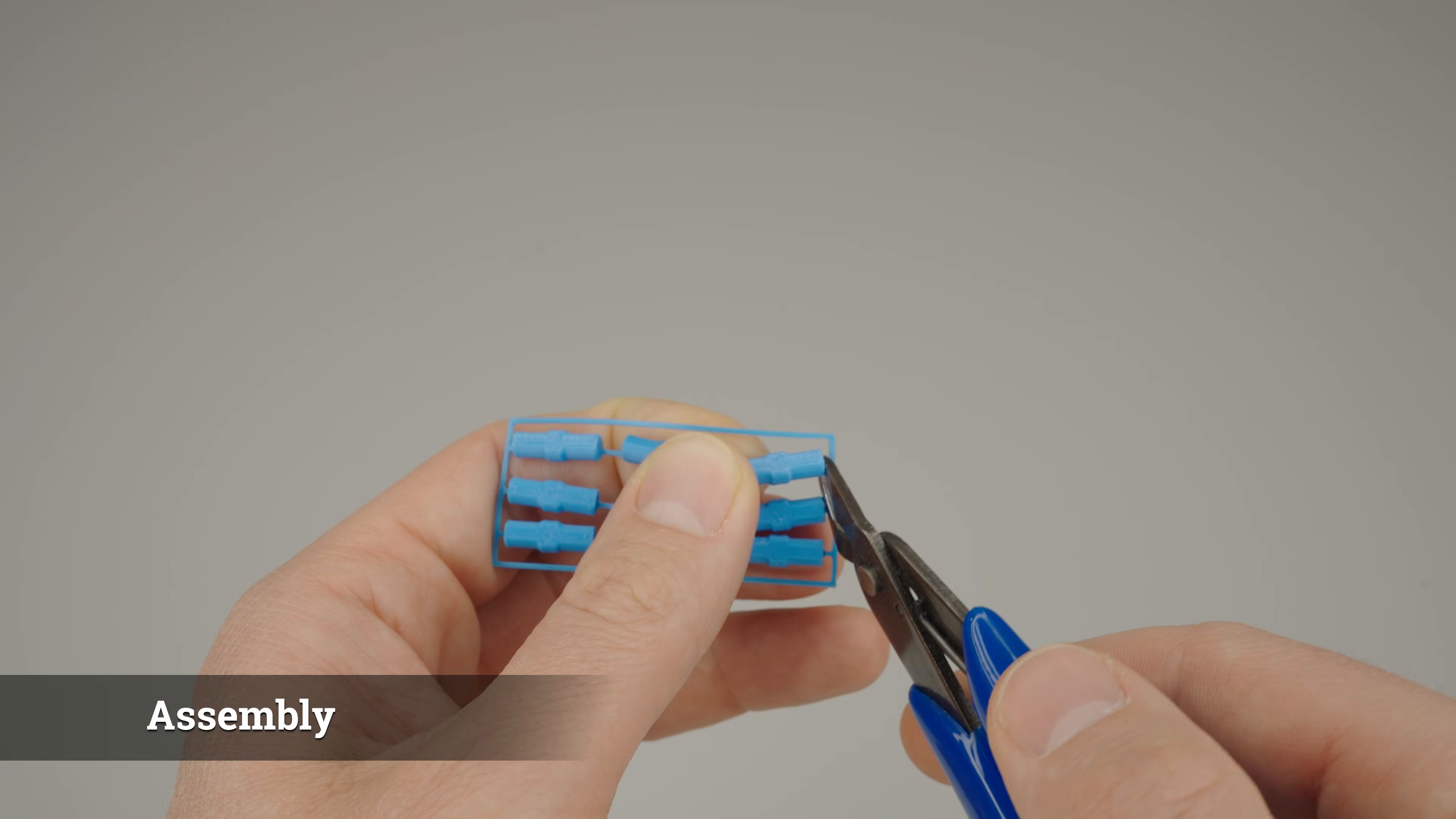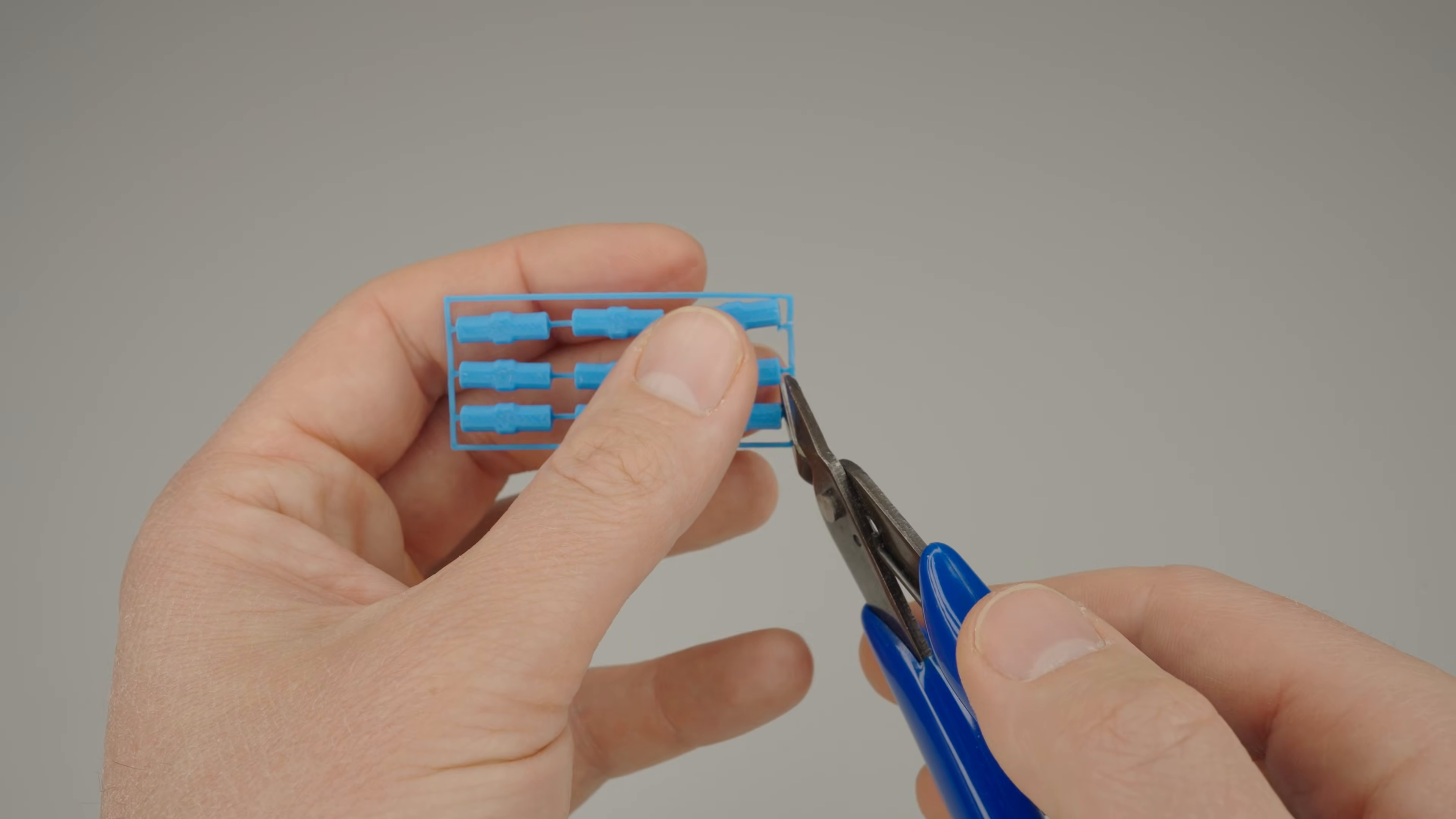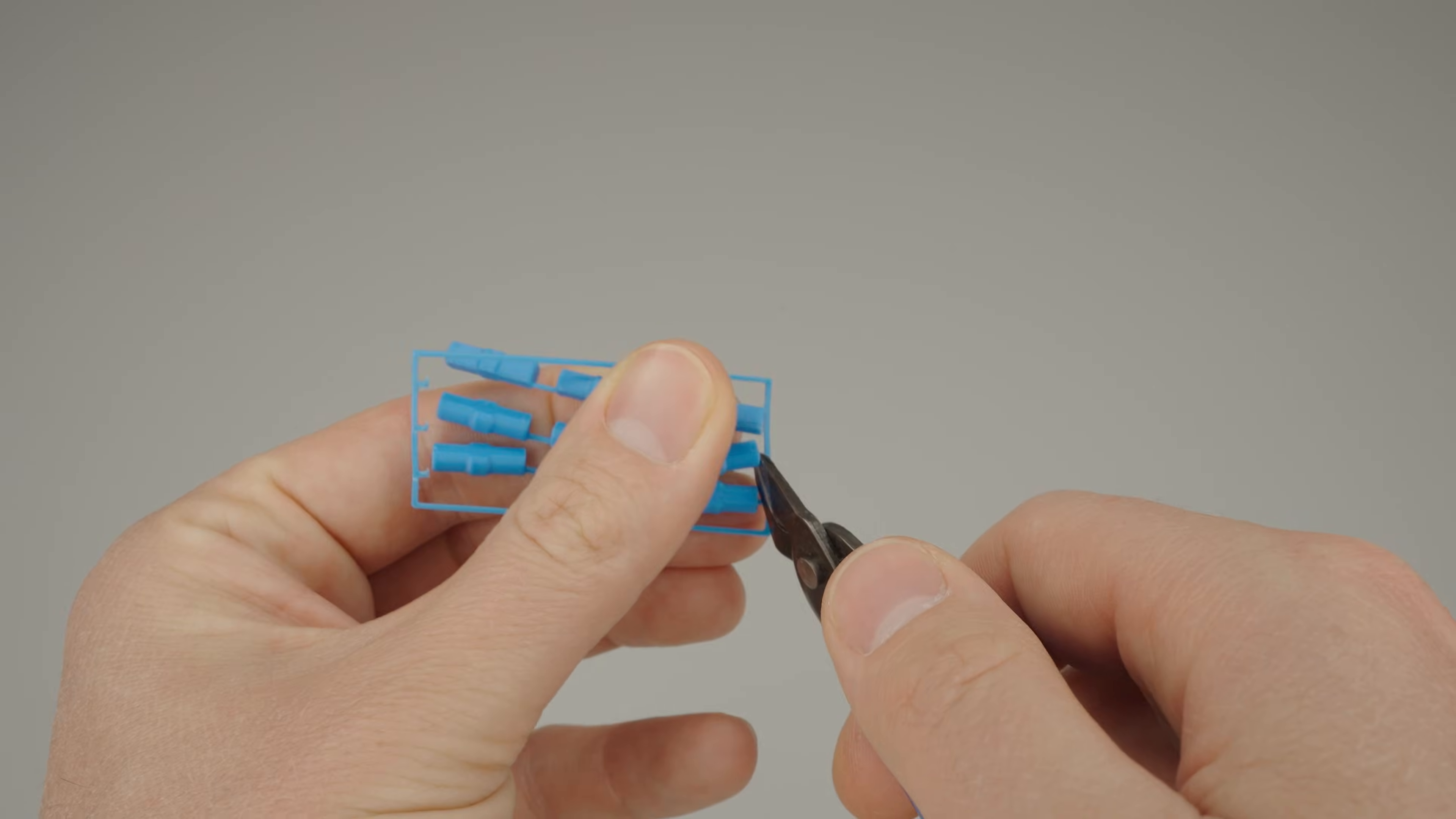Let's move on to the assembly. First we need to separate the pins. I wanted to print them individually, but they kept detaching from the print bed during printing.